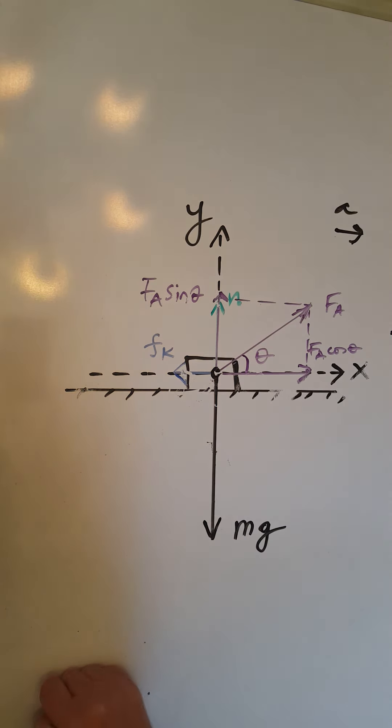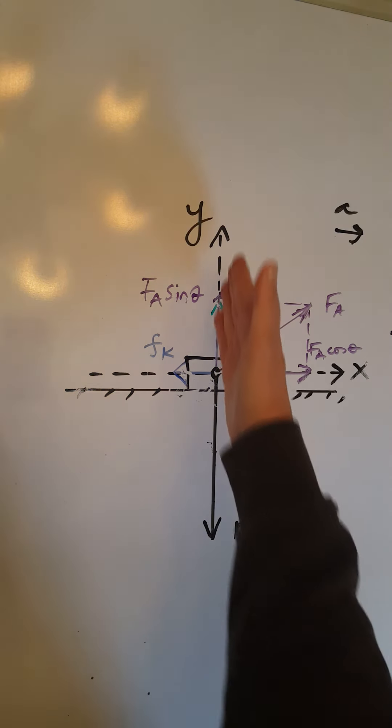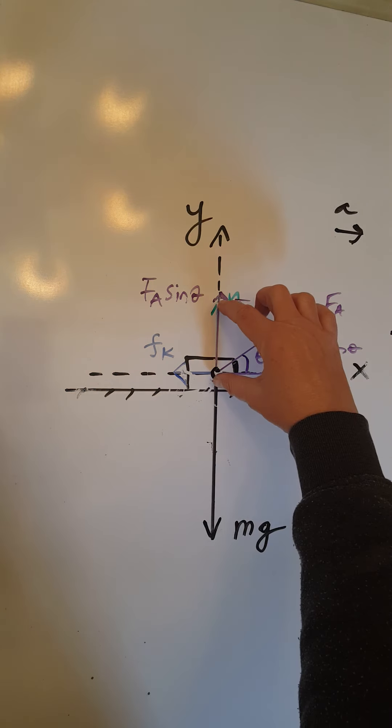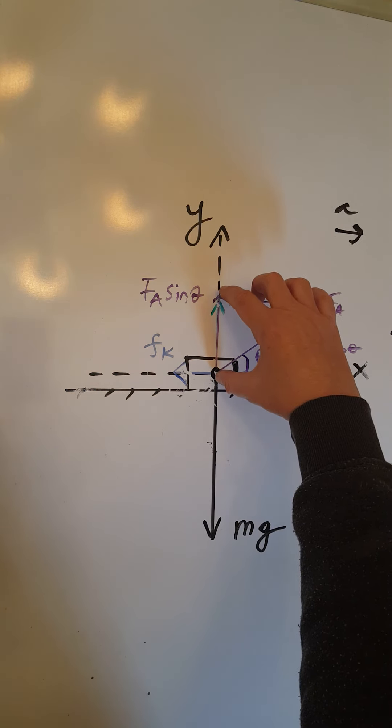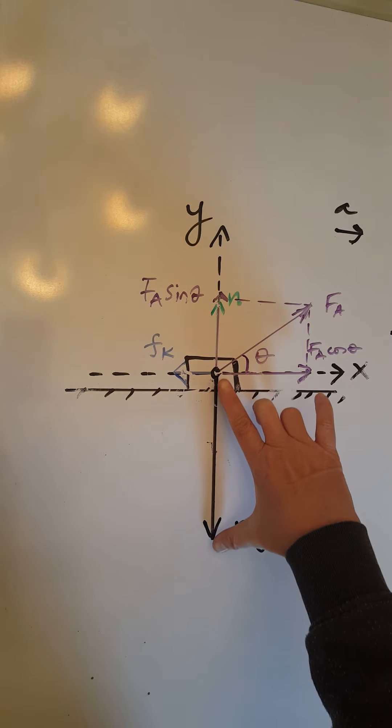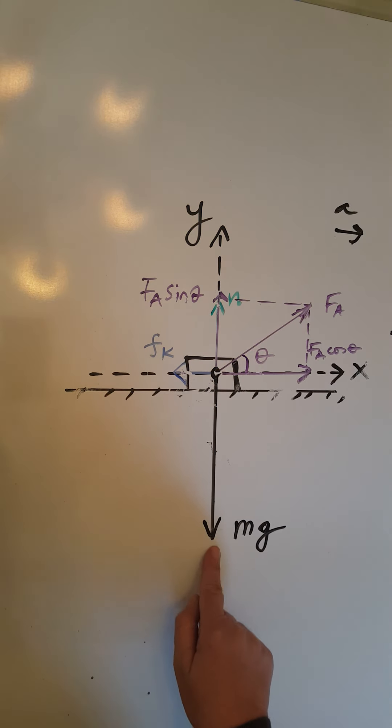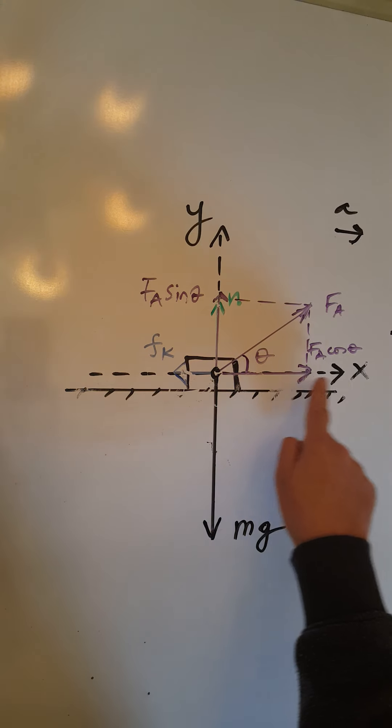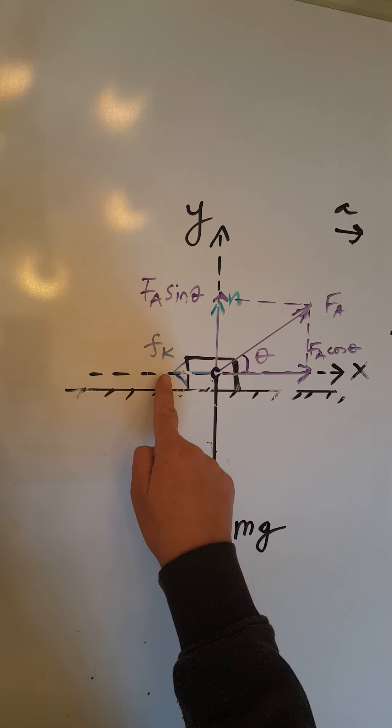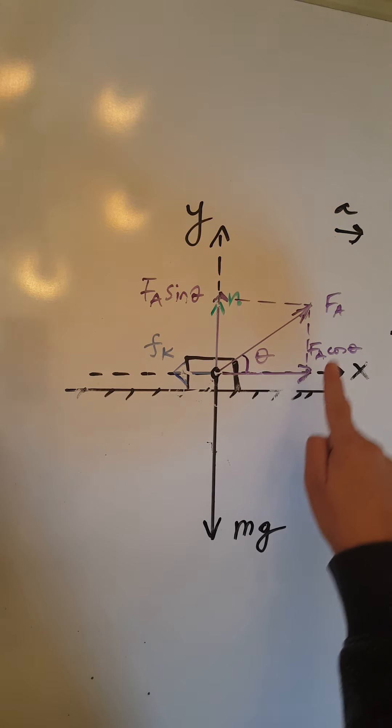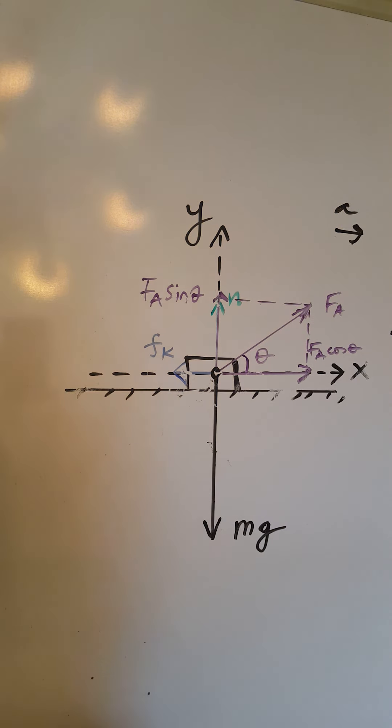And finally, we had to check the magnitudes along both the y axis and the x axis. N and F a sine theta added together had to give us the mg, which we had to adjust because mg was too short. We made it longer. And then F a cosine theta must be greater than Fk because the object accelerates to the right. So we have to have a net force to the right. And this is now finished. Thank you.